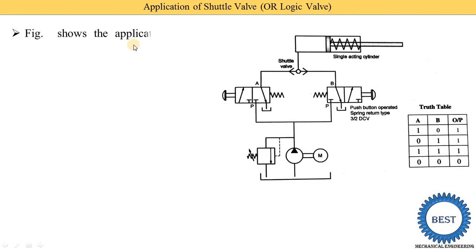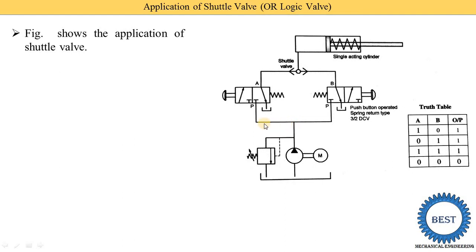The figure shows the applications of the shuttle valve in a complete hydraulic system. The system includes a pump run by a motor, an oil reservoir, and pressure relief valves. Oil coming from the pump is divided into two parts and supplied to two directional control valves.